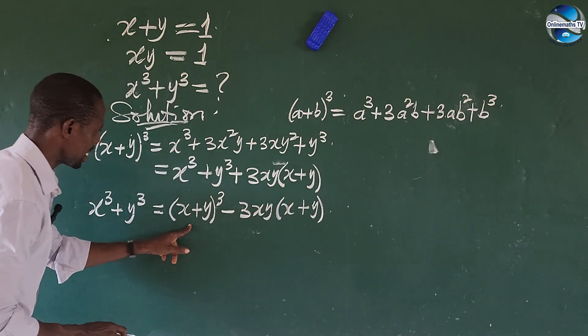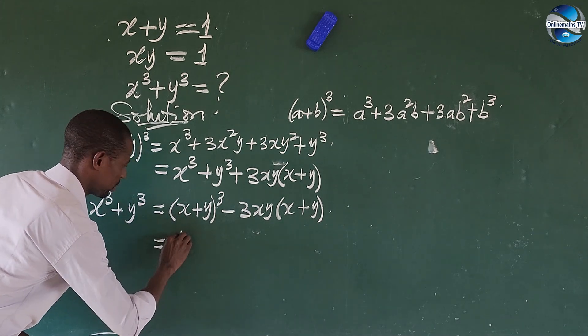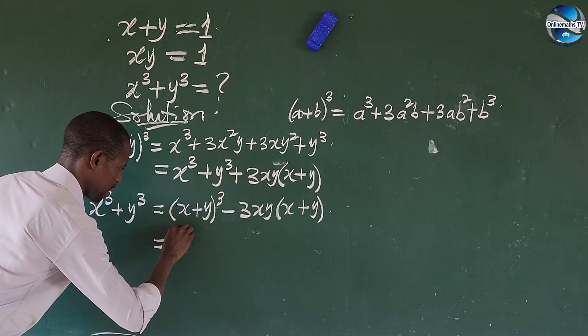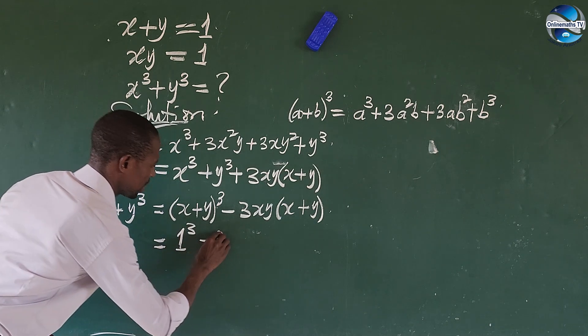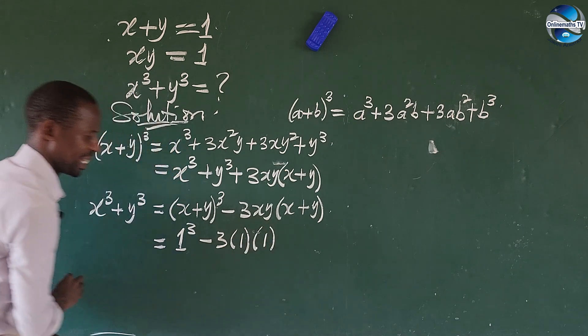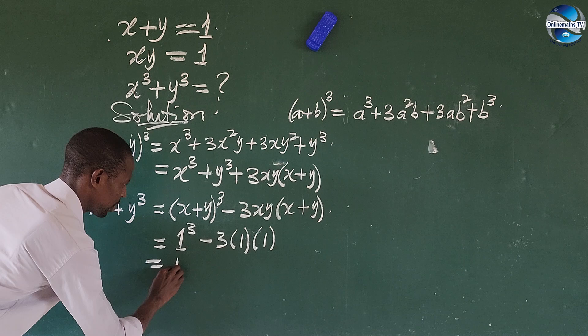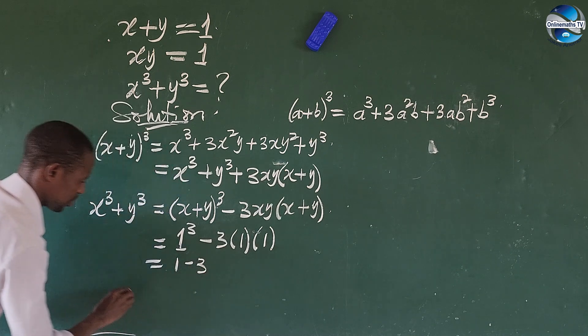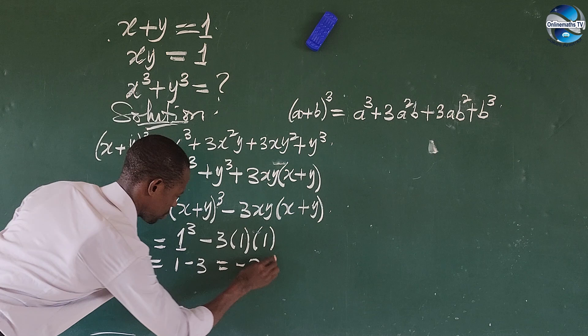So automatically, here it is going to give us 1 to the power of 3. So we now have this to be equal to 1. Okay, let's write it: 1³ minus 3 into 1 then into 1 again here. So this will now give us 1 minus 3. So 1 minus 3 will give us minus 2.